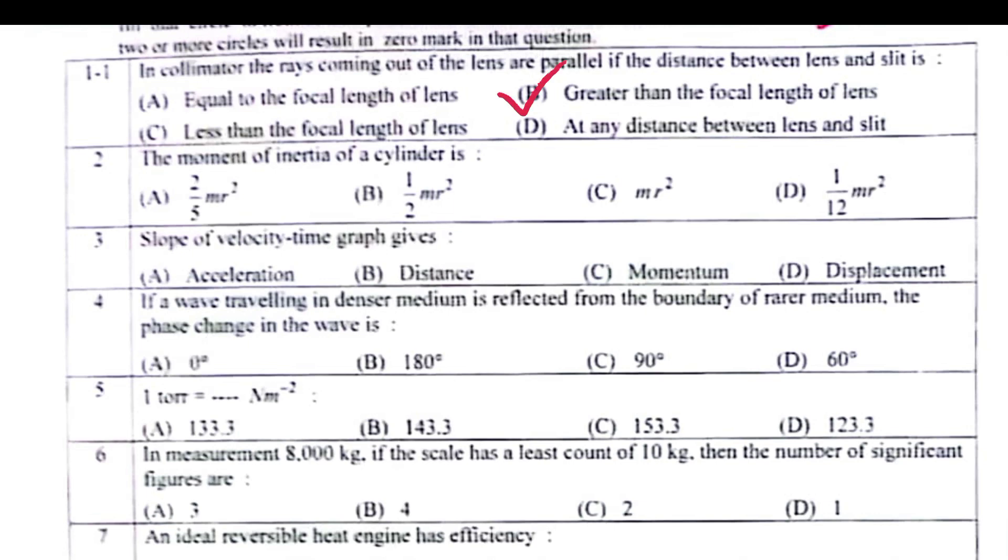Greater than the focal length of lens. The moment of inertia of a cylinder is one over two m r square.